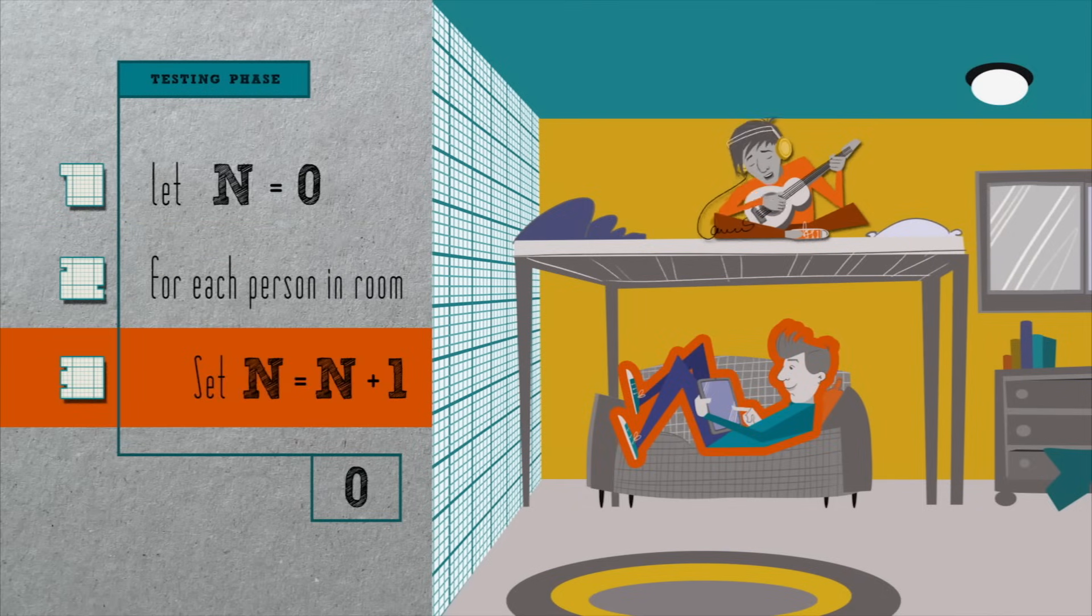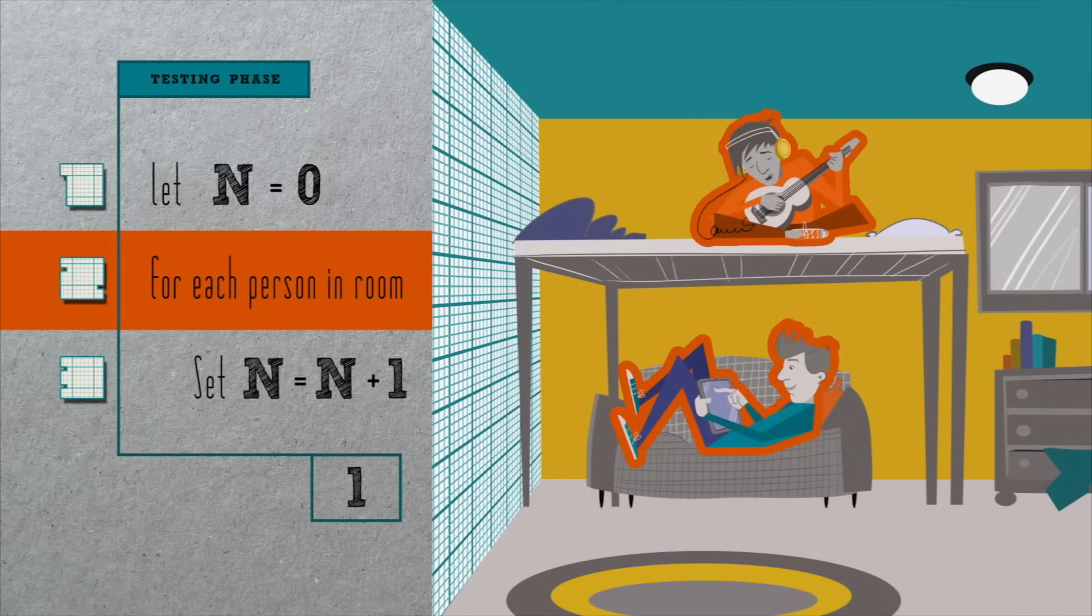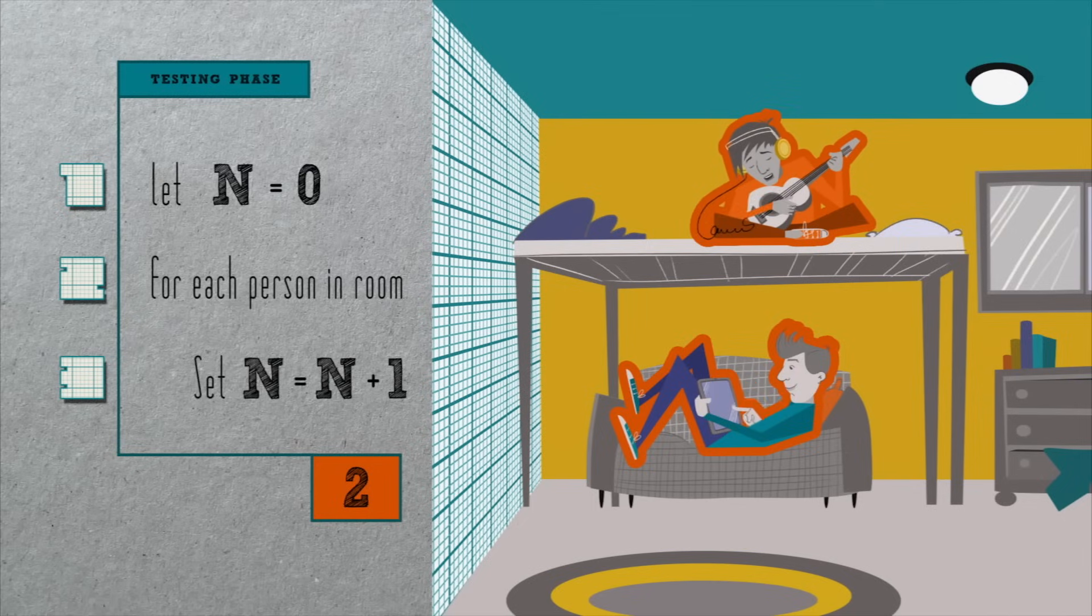On the second trip through that same loop, we update n from one to two. And so, by this algorithm's end, n is two, which indeed matches the number of people in the room. So far, so good.